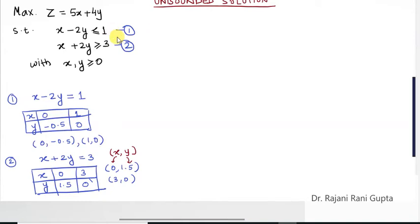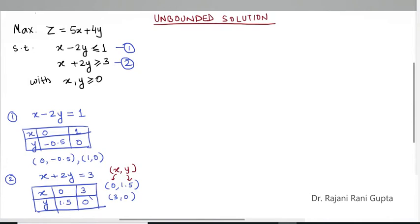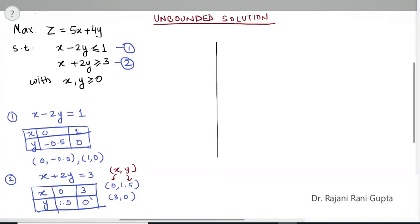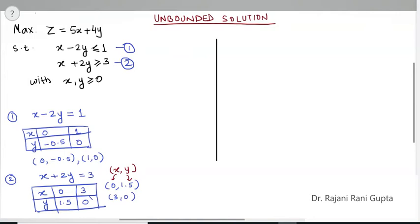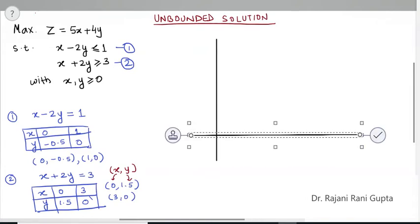Now let's draw these on a graph. The maximum value of x is 3 and minimum is 0. On the y-axis, maximum is 1.5 and minimum is -0.5. Although the non-negativity restriction places our region in the first quadrant, since we got a negative point we still need to draw it.